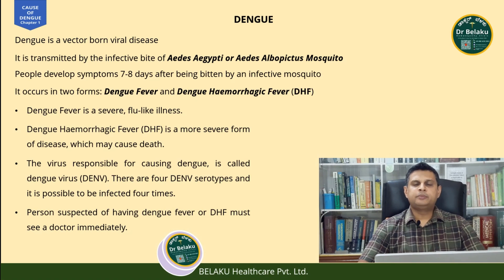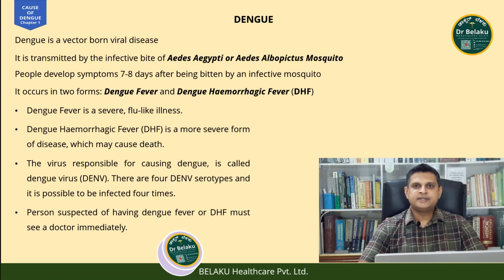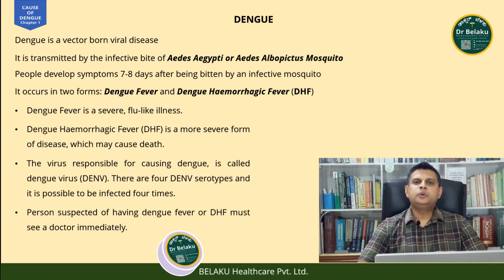Dengue is a vector-borne viral disease. What is a vector? A vector is something that carries anything from point A to point B — it could be your car, your bike, or any other mode of transport. Here in the case of dengue, the vector is a female Aedes mosquito — Aedes aegypti or Aedes albopictus. Dengue occurs in two forms: dengue fever and dengue hemorrhagic fever.